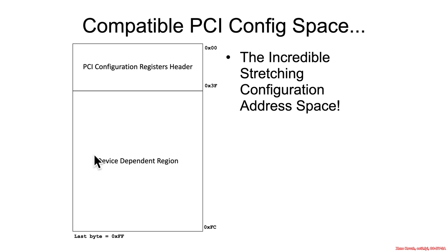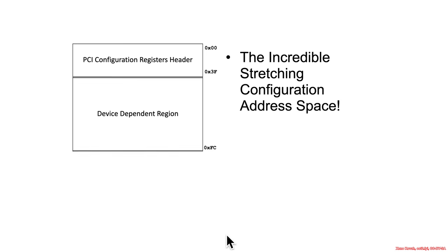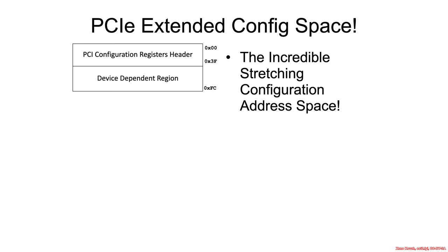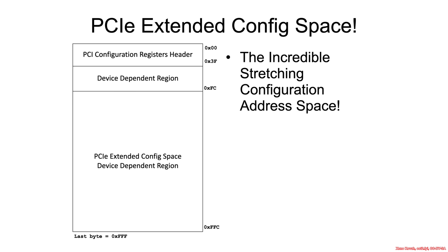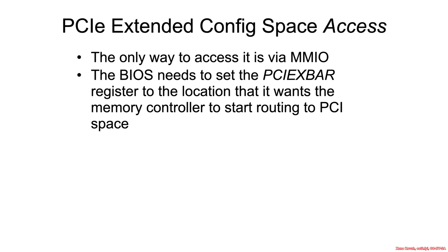The compatible or legacy PCI configuration address space is 256 bytes. The PCIe extended configuration address space is extended up to four kilobytes — from FFFC all the way up to FFFF, that's four kilobytes. The only way to access the extended configuration address space is via memory-mapped IO, not port IO.